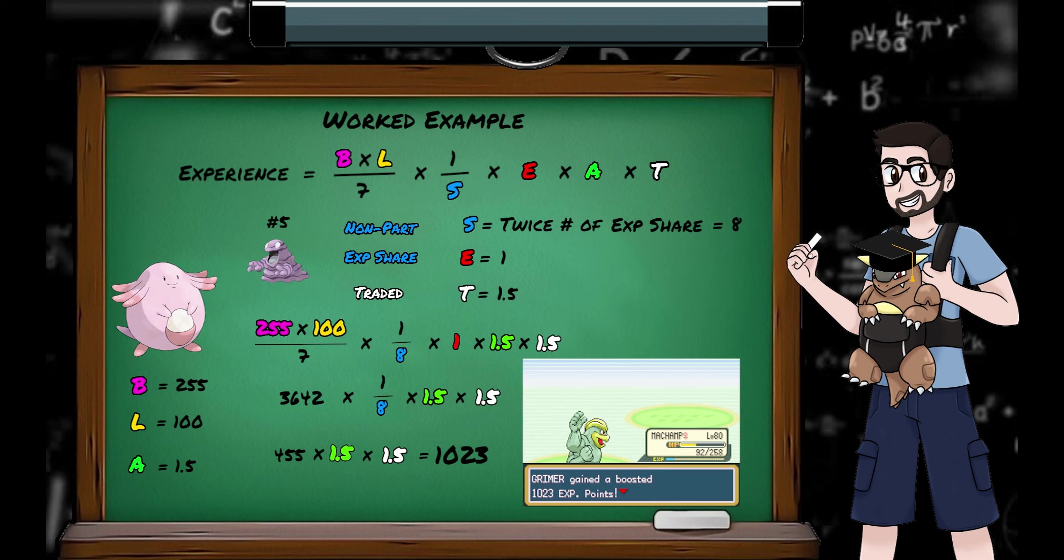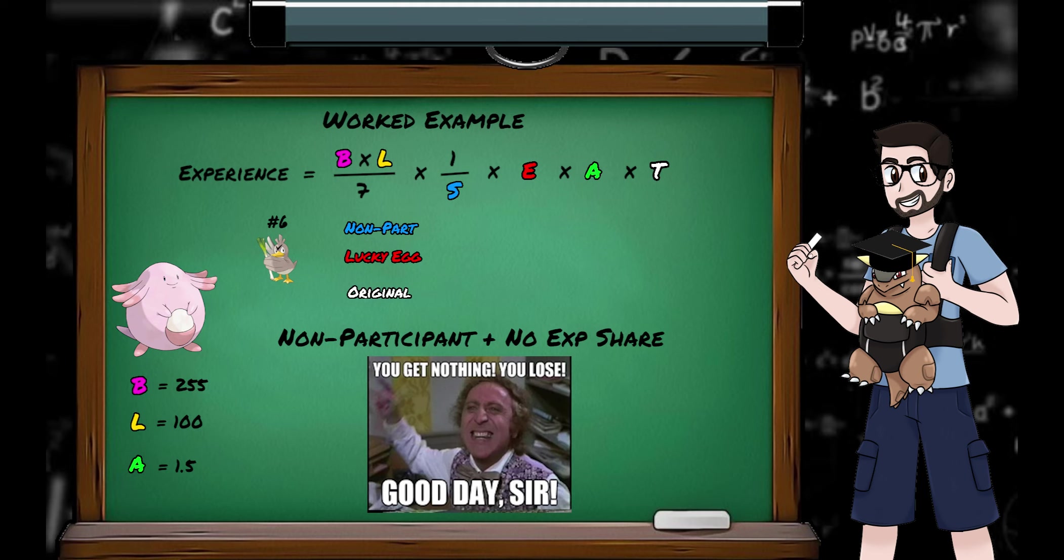Grimer's also a non-participant, but this one is traded, so we'll get 1.5 times the amount Dewgong and Drowzee got, giving Grimer 1023 experience. And finally, poor Farfetch'd is Pokemon number 6. We forgot to give him an XP share, and he didn't participate, so he gets nothing.